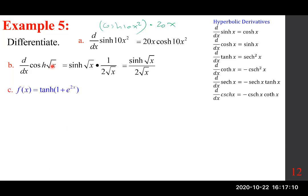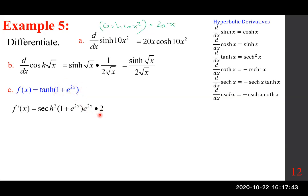For hyperbolic tangent of e to the power of 2x: the derivative of hyperbolic tangent is hyperbolic secant squared, so we get hyperbolic secant squared of e to the 2x, and by the chain rule we multiply by the derivative of e to the 2x, which is 2 e to the 2x.